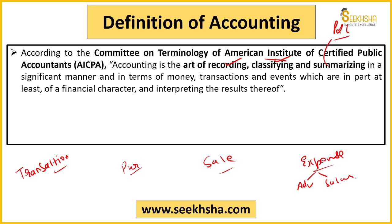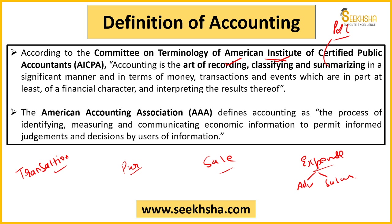Profit and loss statement बना रहे हैं जिसके अंदर हमने जितनी books of accounts बनाई हैं उनसे देख रहे हैं कि profit है या loss है, and finally balance sheet बना रहे हैं। तो accounting के अंदर recording, classification और summarizing — तीनों cover हो गए। There is another definition जो American Accounting Association देती है: process of identifying, measuring and communicating। Communicating इसलिए क्योंकि company के multiple stakeholders होते हैं — सरकार, जनता, shareholders — सभी को company की financial performance में interest होता है।